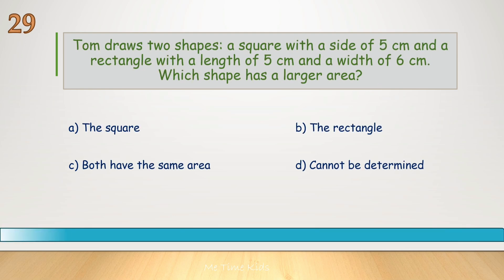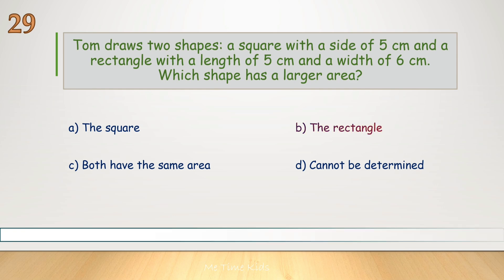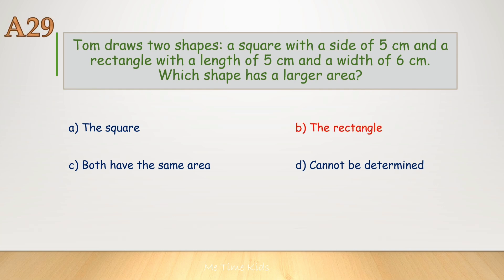Tom draws two shapes: a square with a side of 5 centimeters and a rectangle with a length of 5 centimeters and a width of 6 centimeters. Which shape has a larger area? Correct answer is B, the rectangle.